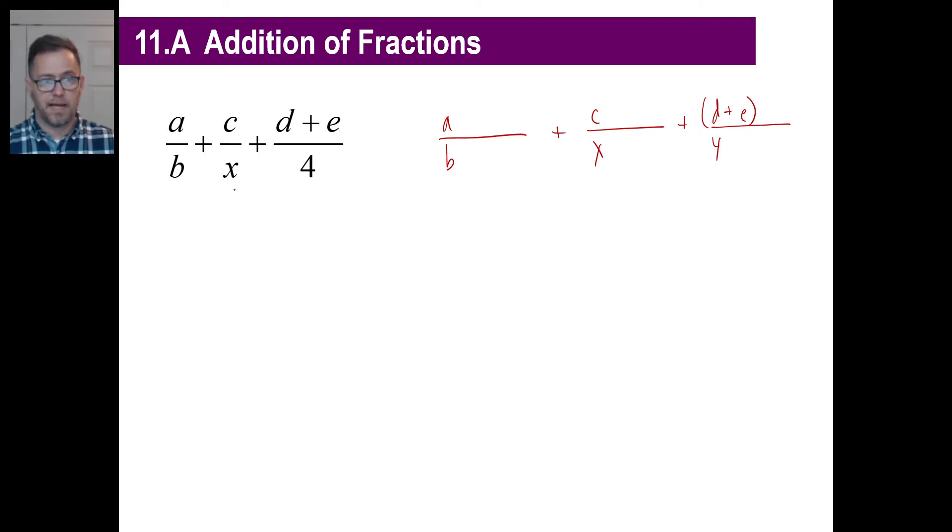Well, we know that the common denominator is going to be 4 times X times B, right? They all need a 4. They all need an X. They all need a B. So all you're doing here is going, okay, this has a B. I multiply it by X, and I multiply it by 4. So I multiply it by X, and I multiply it by 4, right? The second one needs a 4 and a B, right? So I need a 4, and I need a B. So there's my 4, and there's my B. Done. The last one needs an X and a B, right? So this gets multiplied by X and a B. This gets multiplied by X and a B. The only kind of wonky thing here is that this thing, we're going to have to distribute that XB throughout there, but who cares? No big deal.